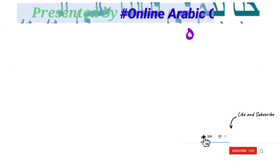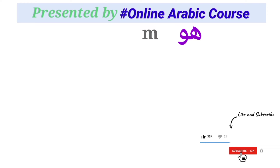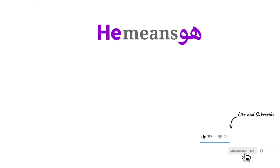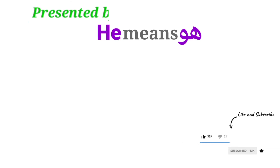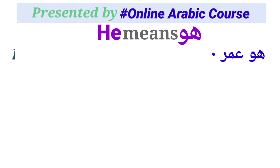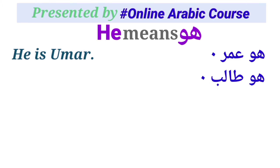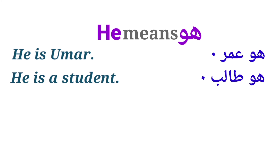First of all, we have the personal pronoun هو (huwa). هو means 'he'. It is used for masculine gender. For example: هو عمر — he is Umar. هو طالب — he is a student. هو is also used with verbs.